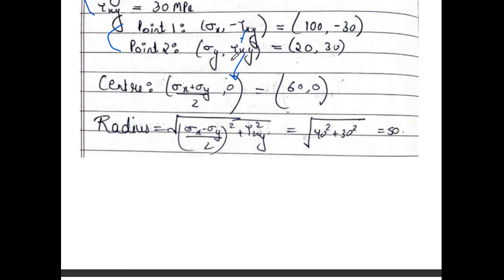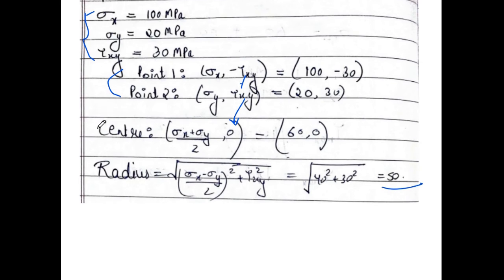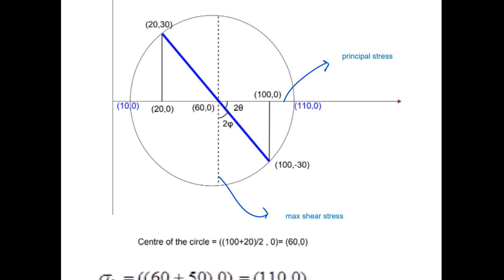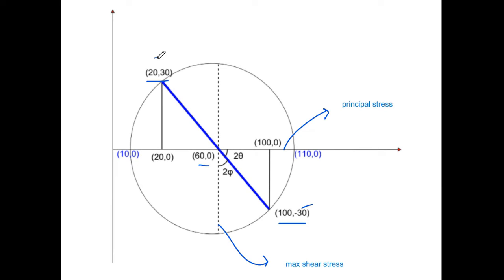The radius is calculated as the distance between the two points, which comes out to 50. With center (60, 0) and radius 50, we draw the Mohr's circle. Points 1 and 2 lie on the circle. The rightmost point of the circle gives the maximum principal stress: 60 + 50 = 110 MPa. The leftmost point gives the minimum principal stress: 60 − 50 = 10 MPa.